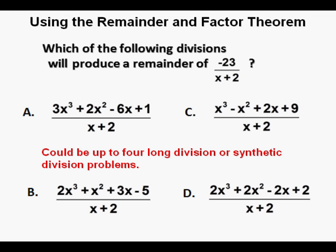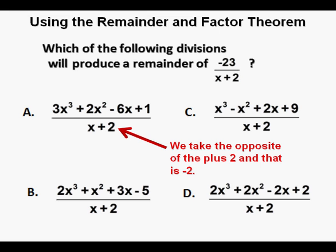This could be up to 4 long division or synthetic division problems before we get our answer. It could even be more than that if we make an error. But with the remainder theorem we can lessen our work considerably. We take the opposite sign of the dividend, the opposite of 2, and that will be negative 2. And if we replace the x's in the dividend with negative 2, we'll be able to find the remainder without having to do long division or synthetic division.